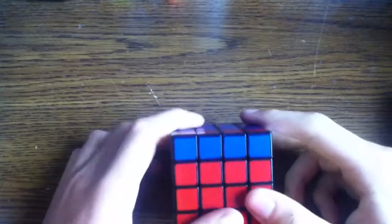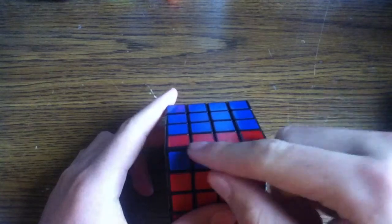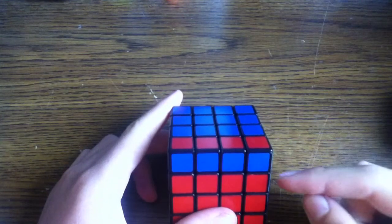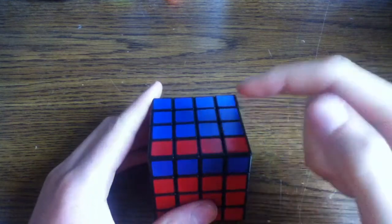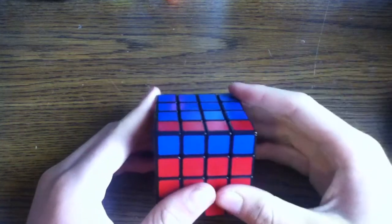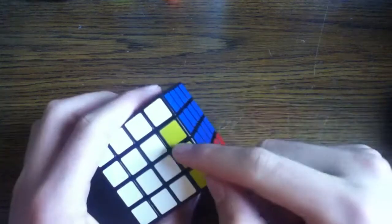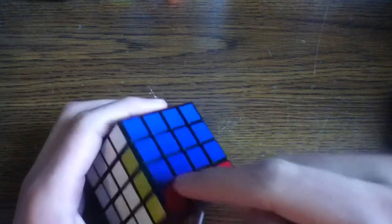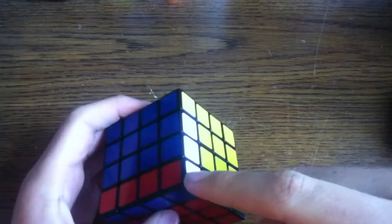The whole point of that algorithm is to flip these two edge pieces around. Something that you cannot do on a 3x3, but you kind of have to do it sometimes on a bigger cube. As you can also see, these two edges and these two edges also switched places, and this corner switched place with this corner.